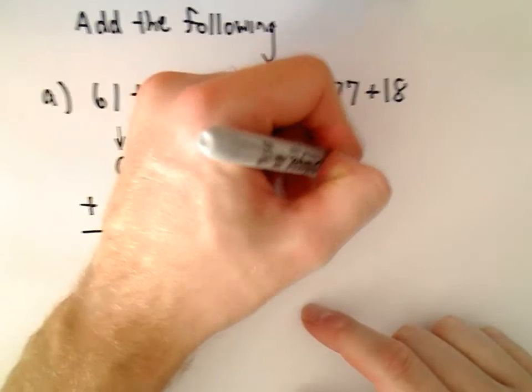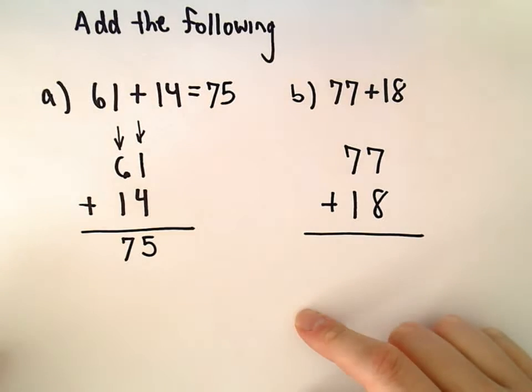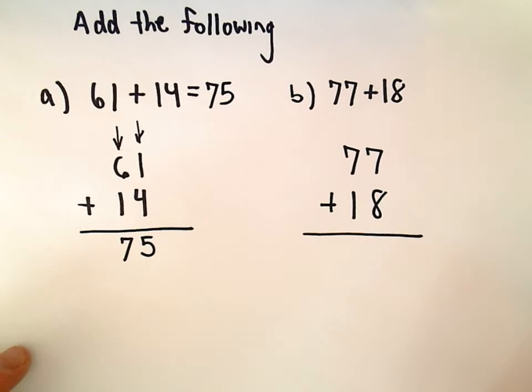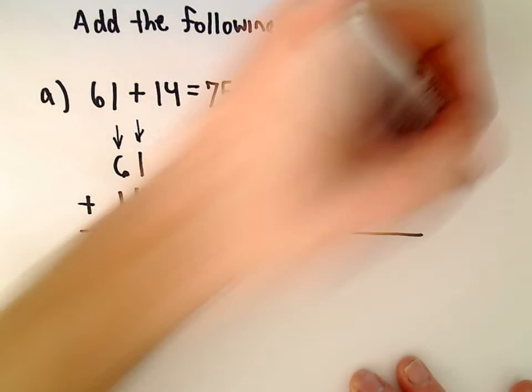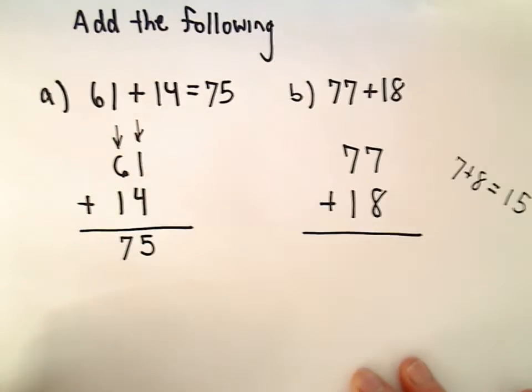We'll do the same thing for our next example, 77 plus 18. Now here we have to be a little more careful. If we do 7 plus 8, well, 7 plus 8 is 15.